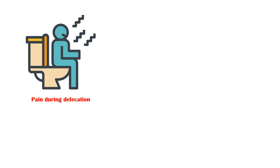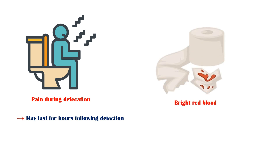The most prominent symptom of anal fissures is pain during defecation, which may last for hours following defecation. Due to the intense pain, patients become reluctant to pass stools, which causes more hardening of stools and worsening of the condition. Pain is associated with bright red blood in the toilet paper or stools. Sometimes, a few drops of blood may fall into the toilet bowl.